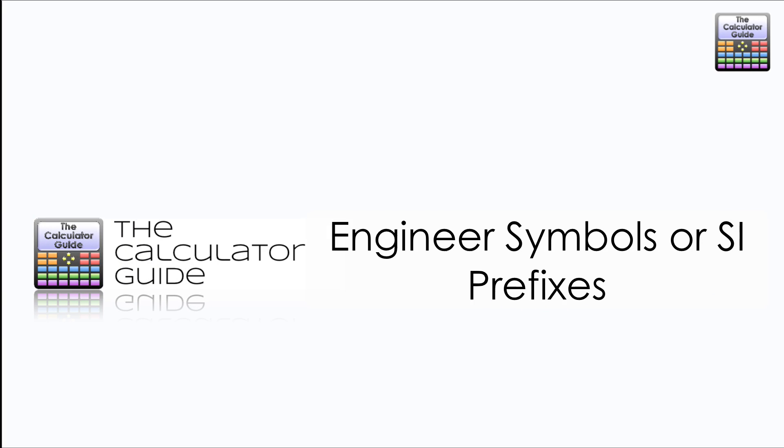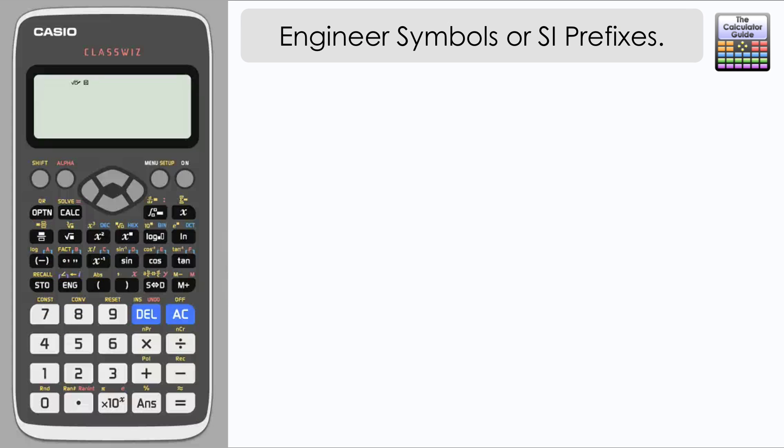Hello and welcome to the calculator guide video on engineer symbols or SI prefixes. We can change the Casio ClassWiz so that it displays numbers using SI prefixes, which is quite useful if you're in the engineering fields or perhaps many other STEM fields where you want the convenience of being able to convert between different metric units.